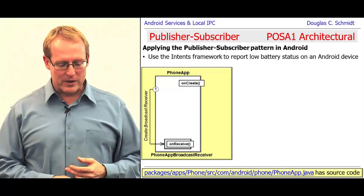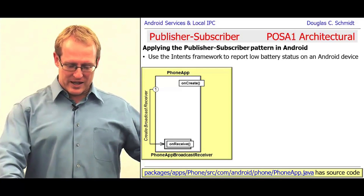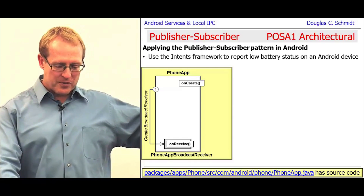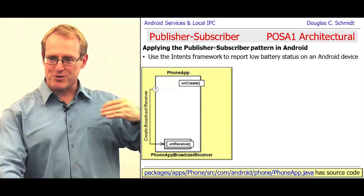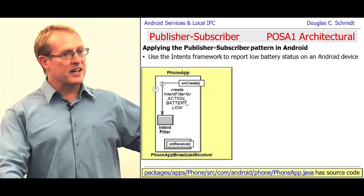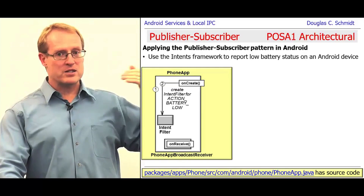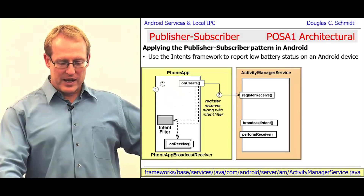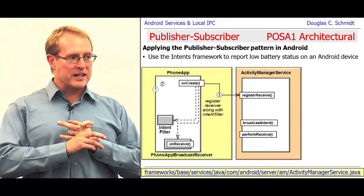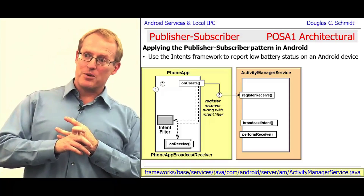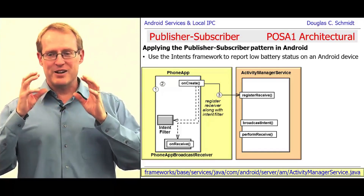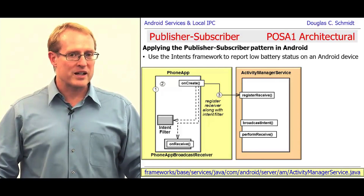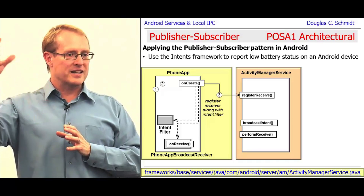What happens is the following: when the phone app starts up, as part of its initialization before the onCreate method is called, it creates a broadcast receiver called PhoneAppBroadcastReceiver. Then in its onCreate method, it creates a bunch of intent filters — one of which is for action battery low — and registers that intent filter along with the phone app broadcast receiver with the Activity Manager Service. That stashes all that stuff inside the hash map we were looking at.